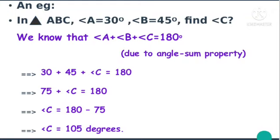Let's see an example. In triangle ABC, angle A is equal to 30 degrees and angle B is equal to 45 degrees — find angle C. Using the angle sum property: angle A plus angle B plus angle C equals 180 degrees. So 30 plus 45 plus angle C equals 180 degrees. That gives 75 plus angle C equals 180 degrees, so angle C equals 180 minus 75, which is 105 degrees.